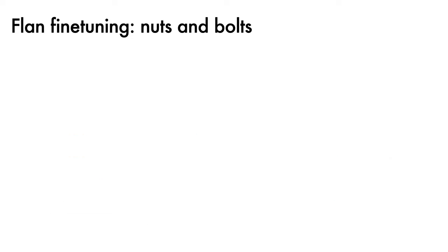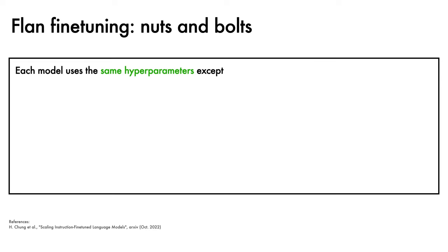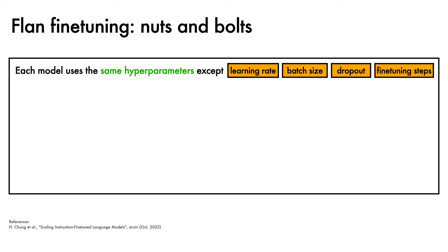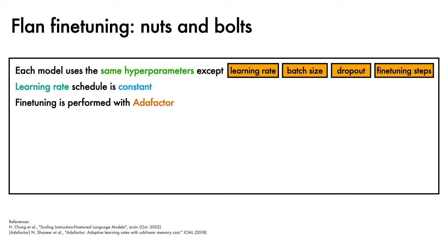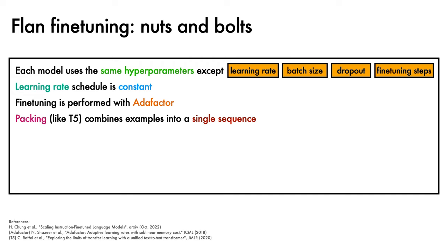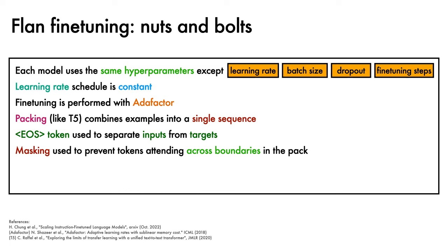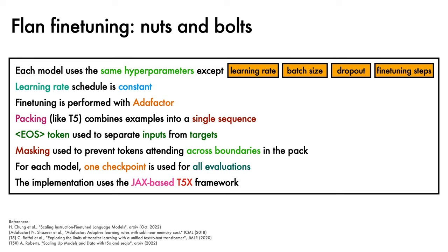We've covered the main ideas in the paper. We'll now go through some of the nuts and bolts of the Flan fine-tuning process. Each model uses the same hyperparameters, except for learning rate, batch size, dropout, and the number of fine-tuning steps. The learning rate schedule is constant. Fine-tuning is performed with the Adafactor optimizer. For efficiency, packing as used in T5 is used to combine examples into a single sequence, while an end-of-sequence token is used to separate inputs from targets. Masking is used to prevent tokens from attending across boundaries in the pack. When it comes to evaluating each model, one checkpoint is used for all evaluations. The implementation uses the JAX-based T5X framework.